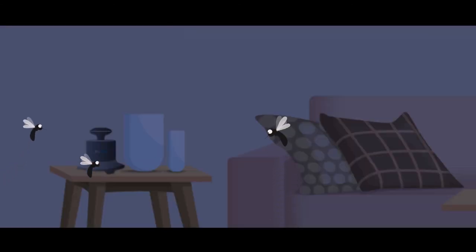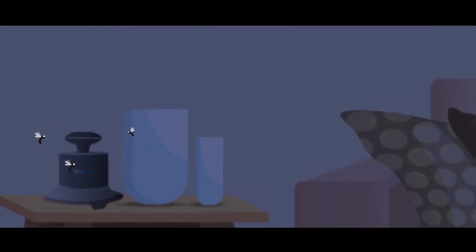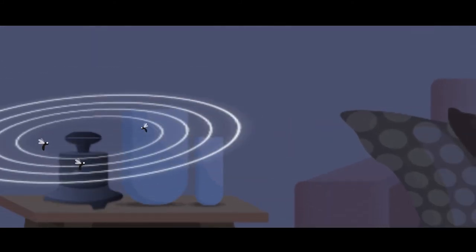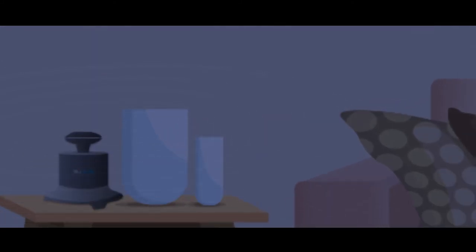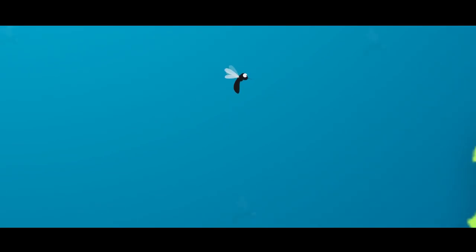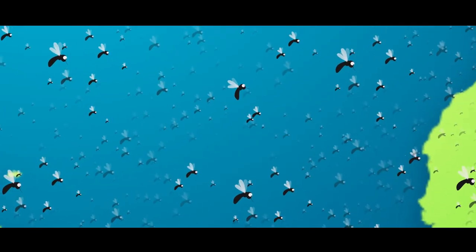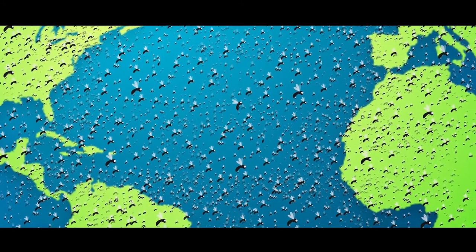Mosquitoes get attracted to these pheromones and once they come near the machine's dome-like care zone, it uses 3D Dynamics pressure management technology to kill them. Each mosquito killed saves the earth from 675 crore possible new mosquitoes in the next three months.